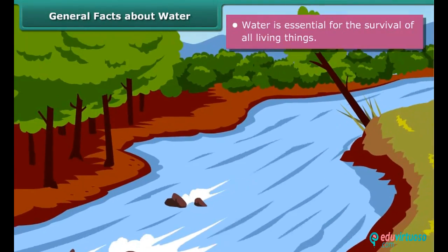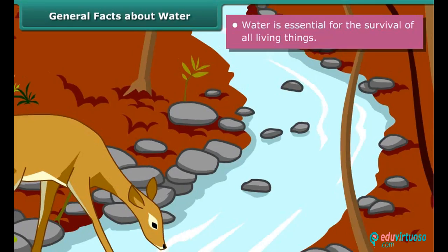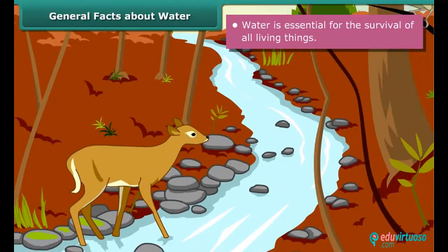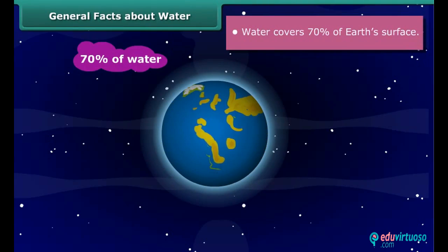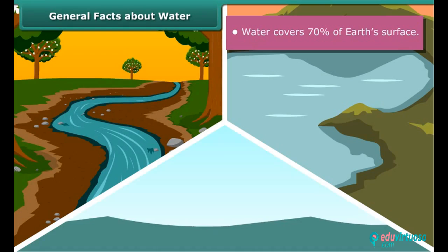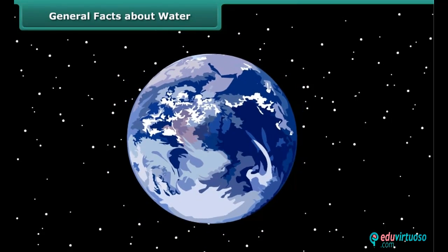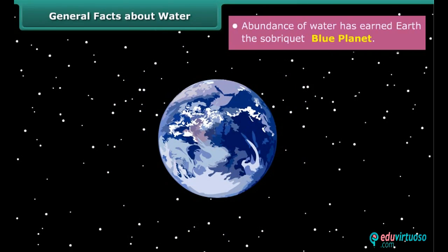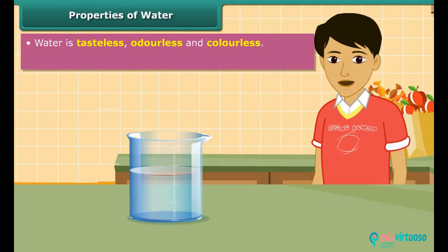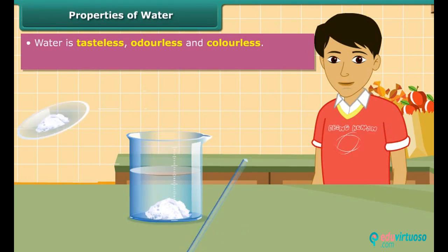Water is essential for the survival of all living things — plants, animals, human beings and other life forms. It covers 70% of our planet in the form of rivers, ponds, oceans and streams, making earth appear blue in color when seen from space. In fact, the abundance of water has earned earth the sobriquet 'blue planet'.